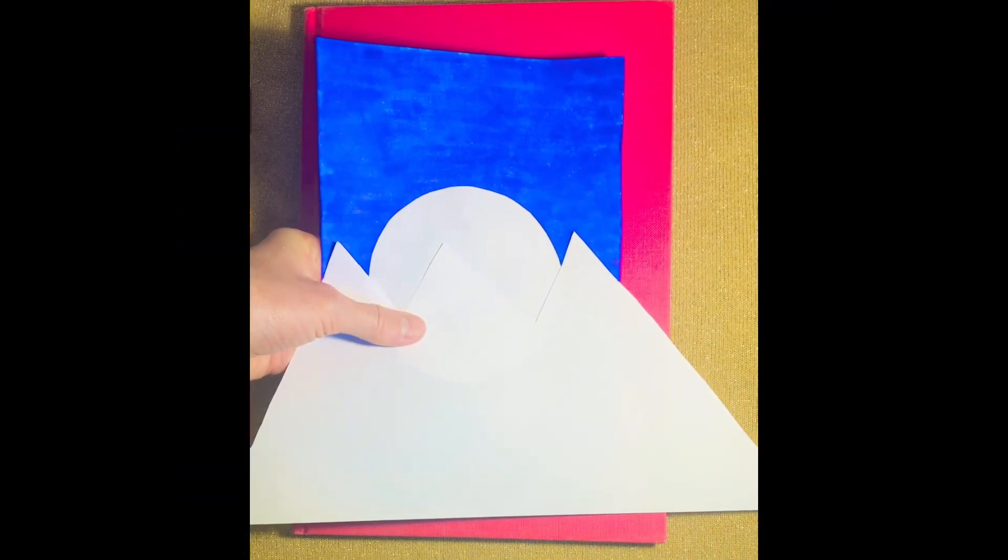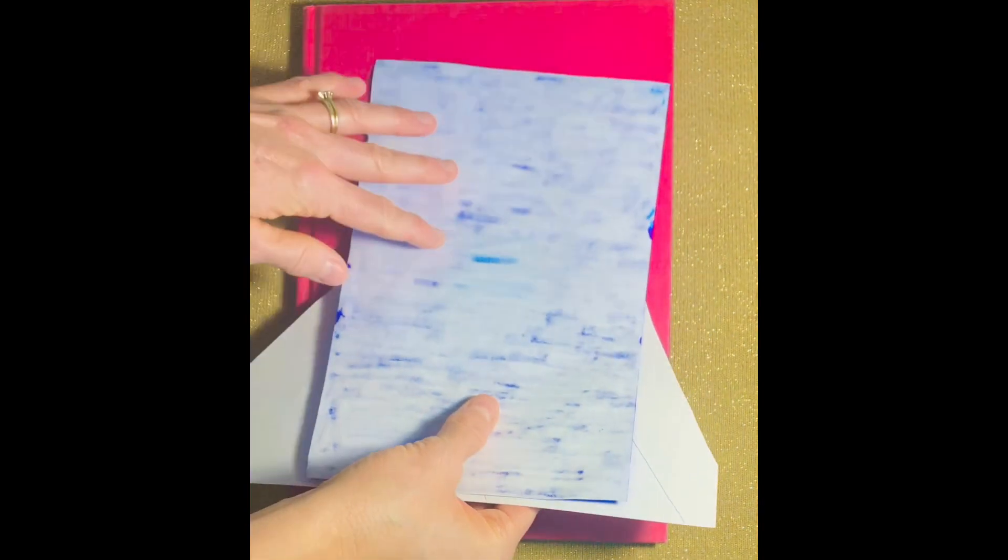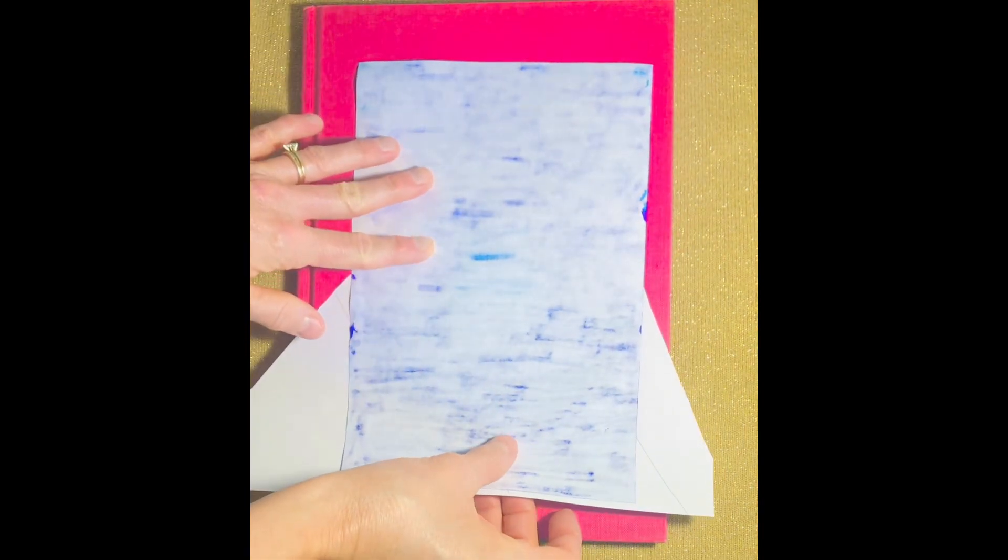You want to place your mountains in front of the moon and then you can turn your paper over and see where you can cut along the edge of your paper for the overlapping of the mountains.